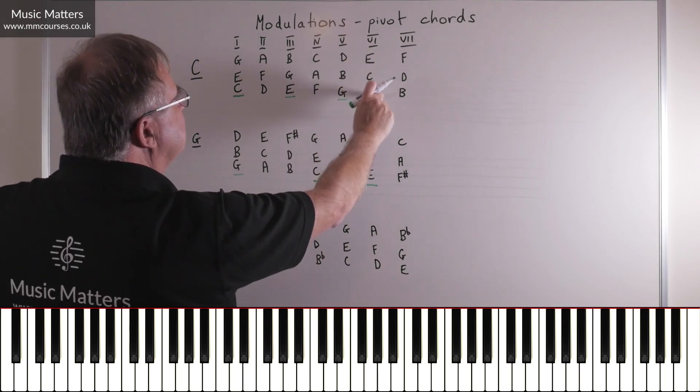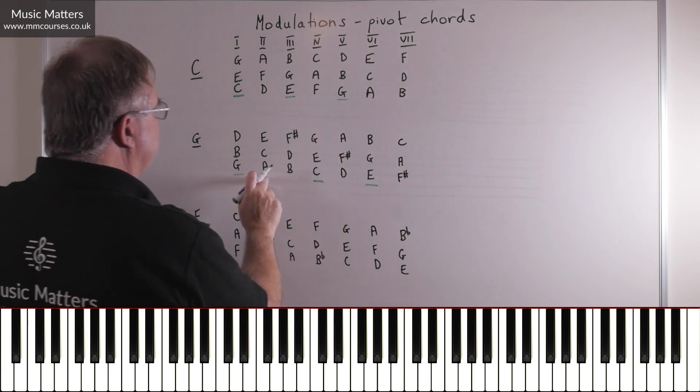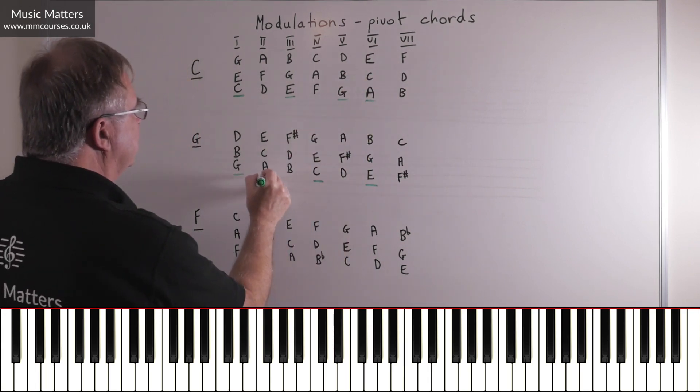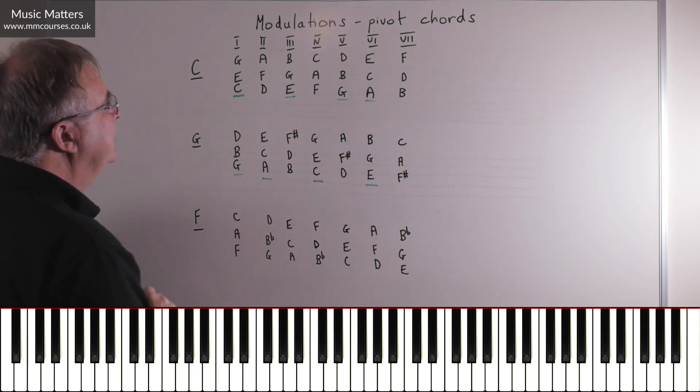What about chord VI, A, C, E? Oh lovely, it's also one here. So chord VI in C major is chord II in G major.